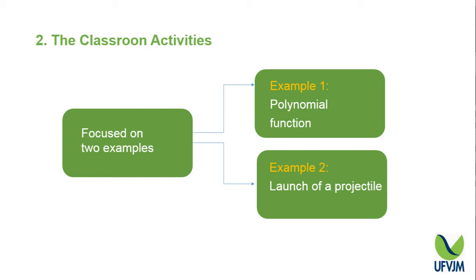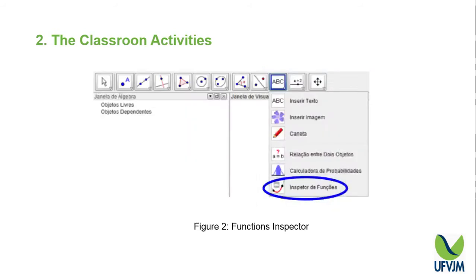The first example shows the behavior of a fourth-degree polynomial function along the domain, exploring its maximum and minimum points. The second example presents the launching of a projectile in three different situations. The activity was proposed with the goal of showing students the importance of finding the maximum and minimum points of the polynomial function.